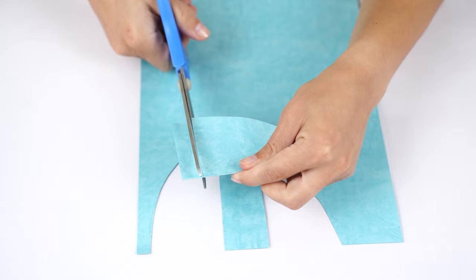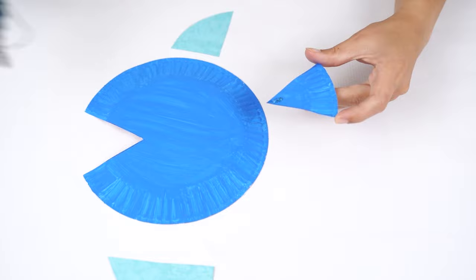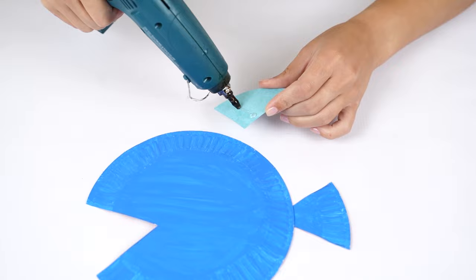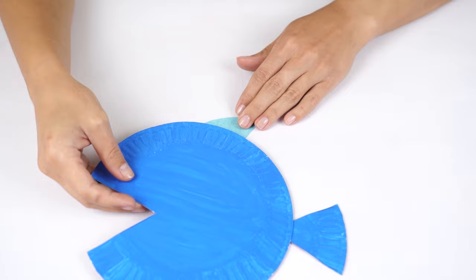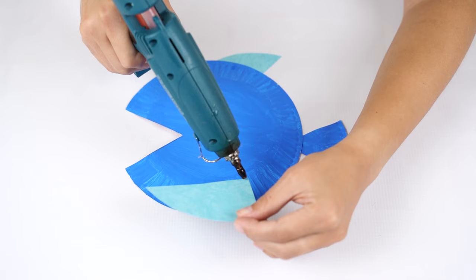Next, glue the tip of the pie sliced to the plate edge opposite to the mouth. Glue on the longer side of the shorter fin to the bottom edge of the fish, and the longer side of the longer fin to the top edge.